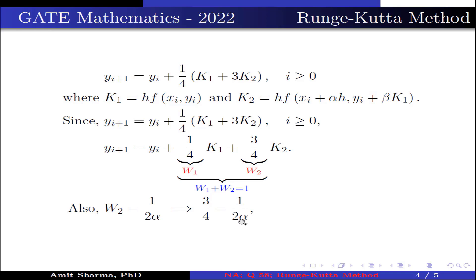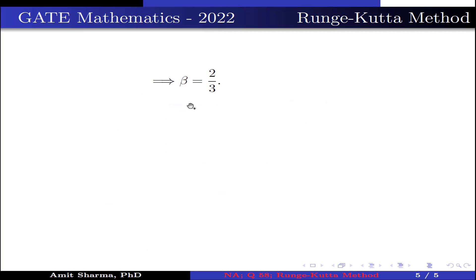After simplifying, we get α = 2/3. This implies the value of β is 2/3, because α = β.